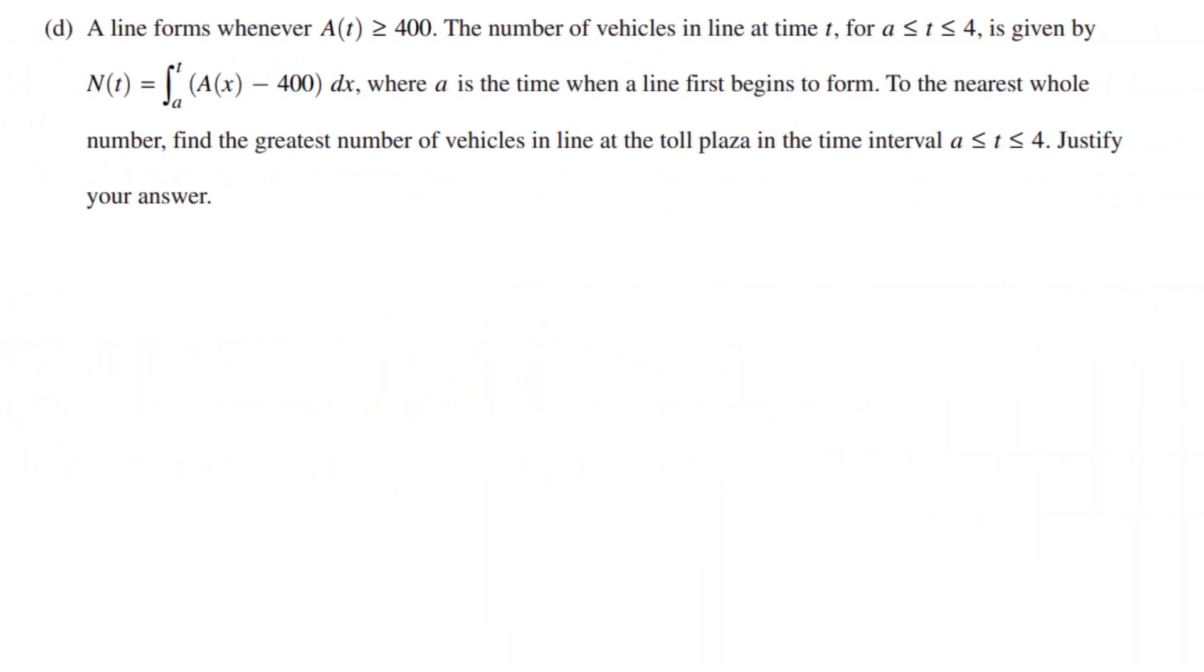Part D tells us that a line forms whenever A(t) is greater than or equal to 400. The number of vehicles in line at time t for a less than or equal to t less than or equal to 4 is given by N(t) equals an integral from a to t of A(x) minus 400, where a is the time when a line first begins to form.